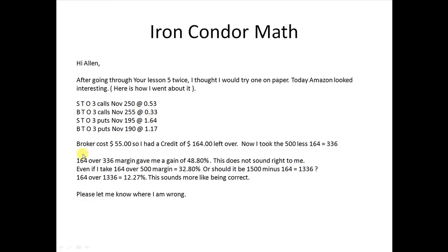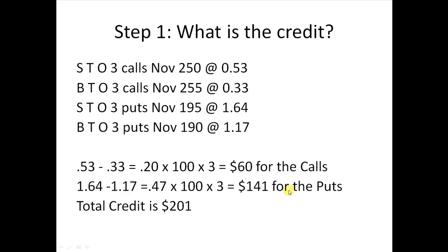He mentioned his commissions were $55, and he had a credit of $164, so he subtracted that from $1500 to get $1336. But I looked at this and it's basically incorrect. So let's go through this step by step and see what he did wrong and how to do it right.